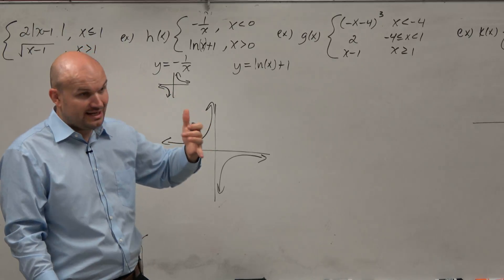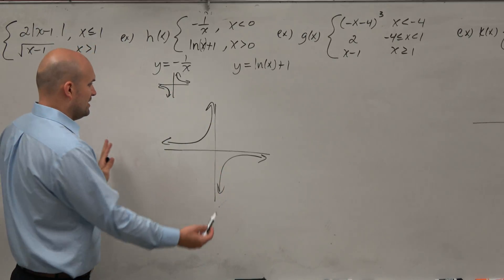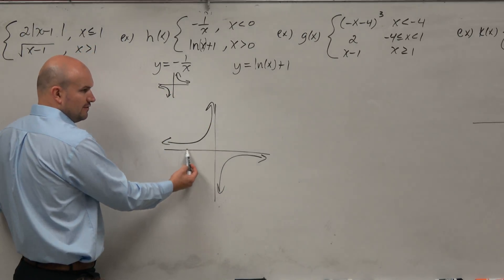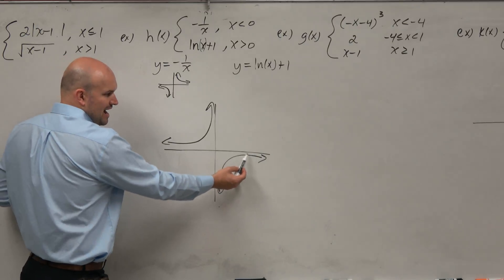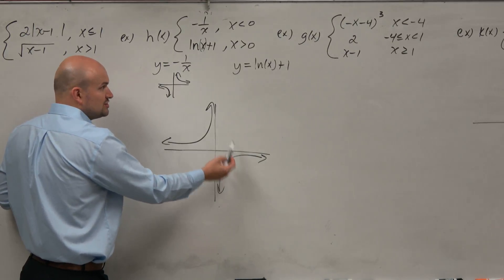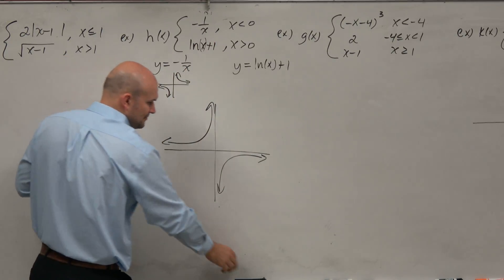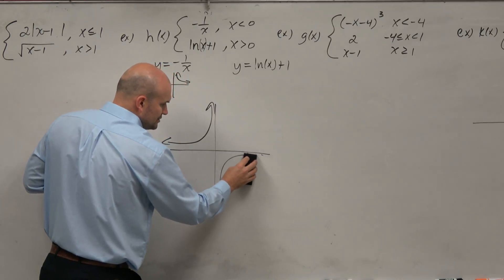meaning for only negative values. So we say, well, when is x negative? x is only negative over here. So that means this graph is graphed when x is positive, which is not within the domain restriction. So we're just going to erase it.